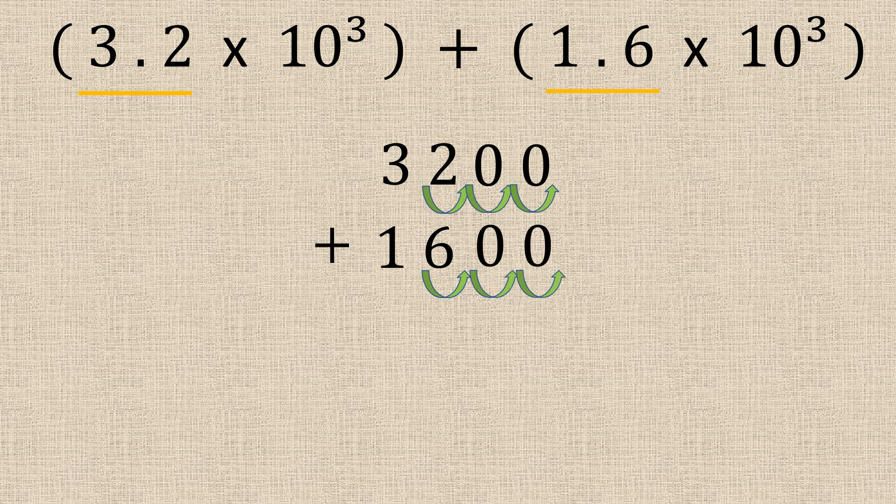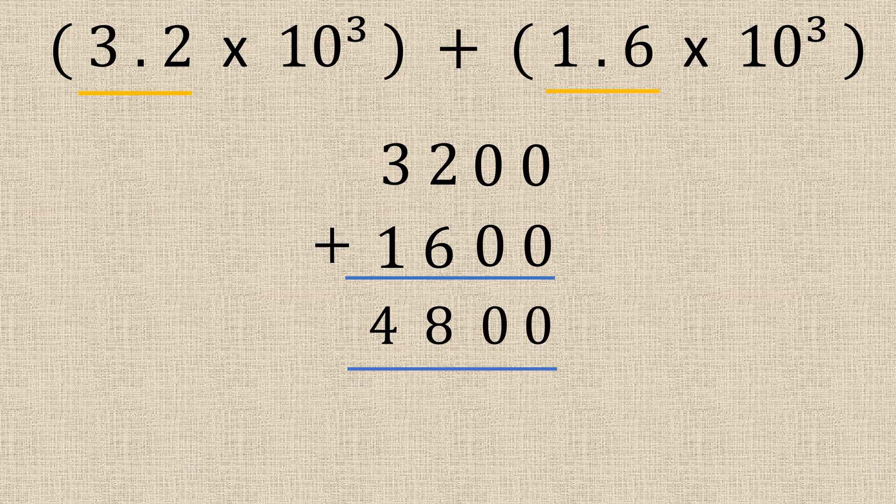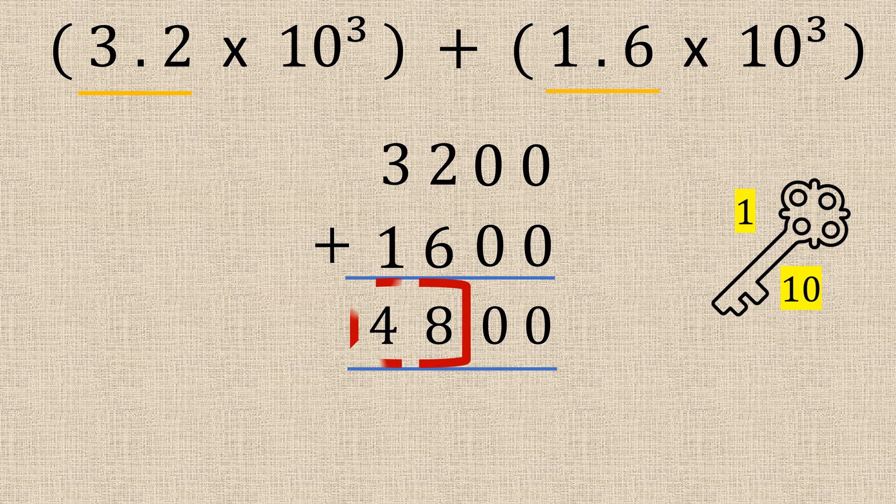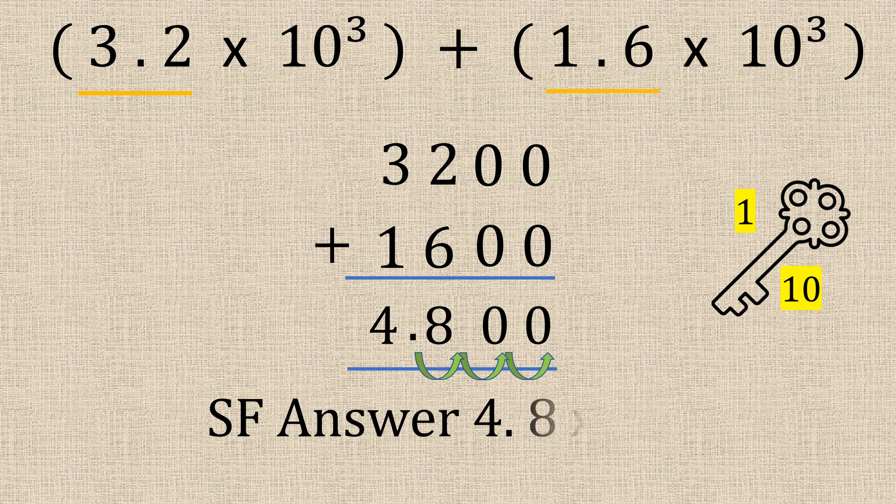Okay, we're going to add these together which is going to give us 4800. Here's our key, let's remember our 1 and 10. So we put the decimal place here giving us 4.8. And we count 1, 2, 3. So the answer is 4.8 times 10 to the power of 3.